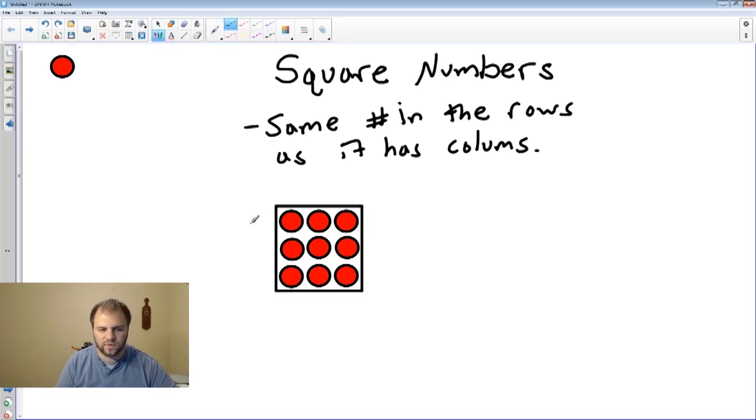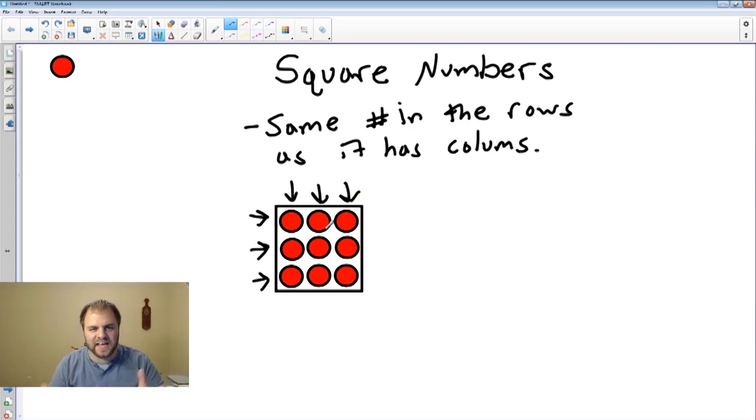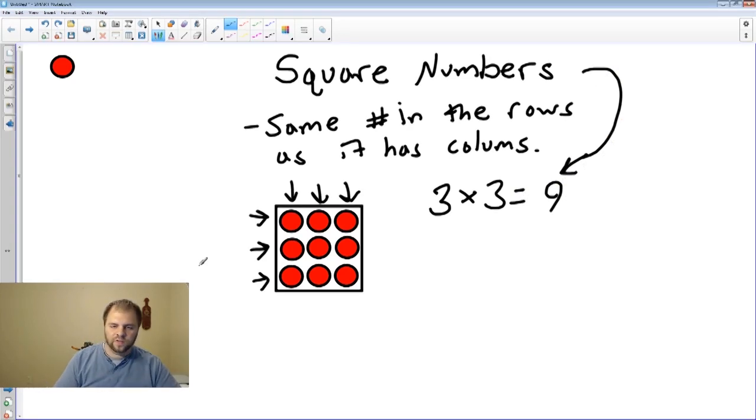Three rows: one, two, three. And three columns. As we all should know through geometry, a square has all sides the exact same, and that's what you get here. This is a three by three array which equals nine. Nine is our square number. Three by three array equals nine. Let's look at another example.